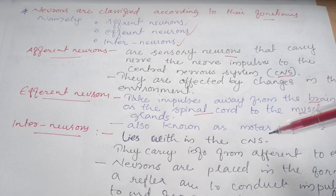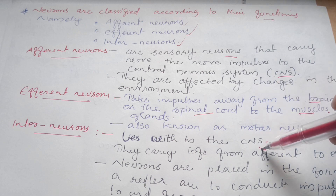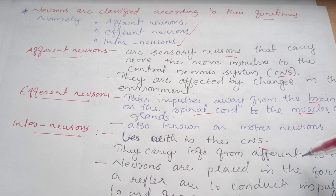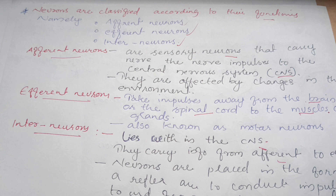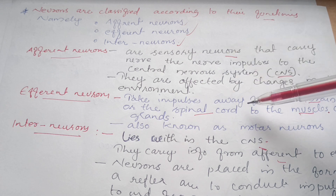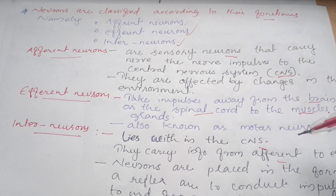Interneurons lie within the central nervous system. They carry information from afferent to efferent neurons and are responsible for all the connections of their internal network within the nervous system.